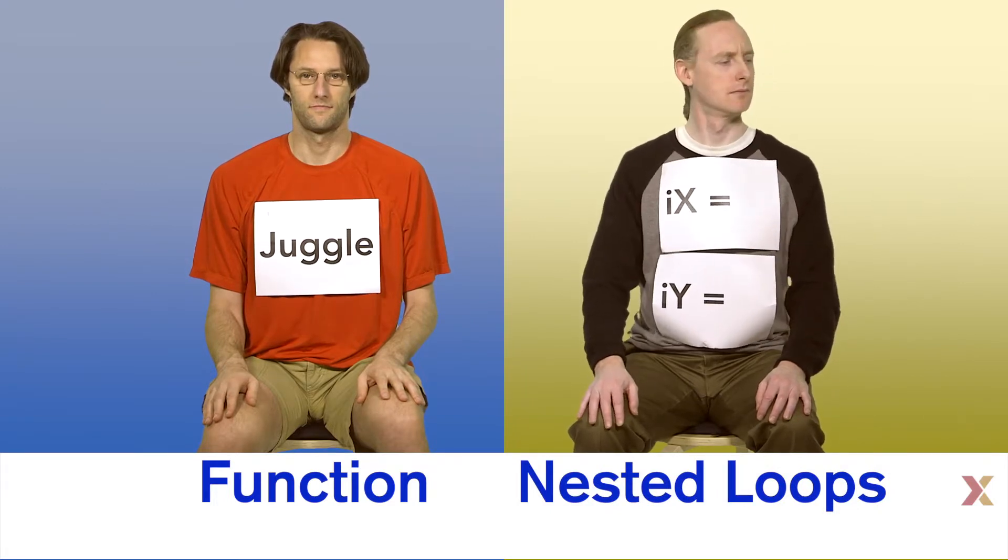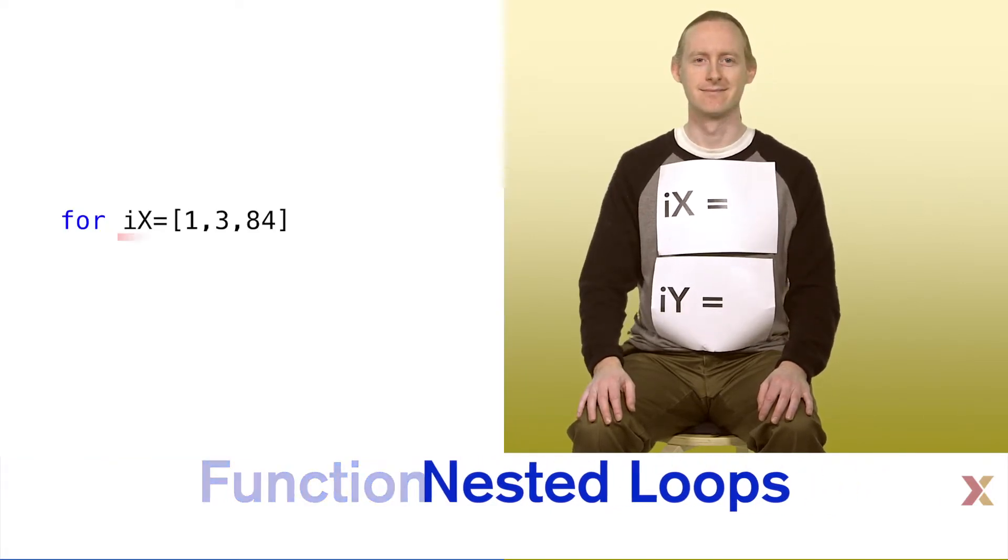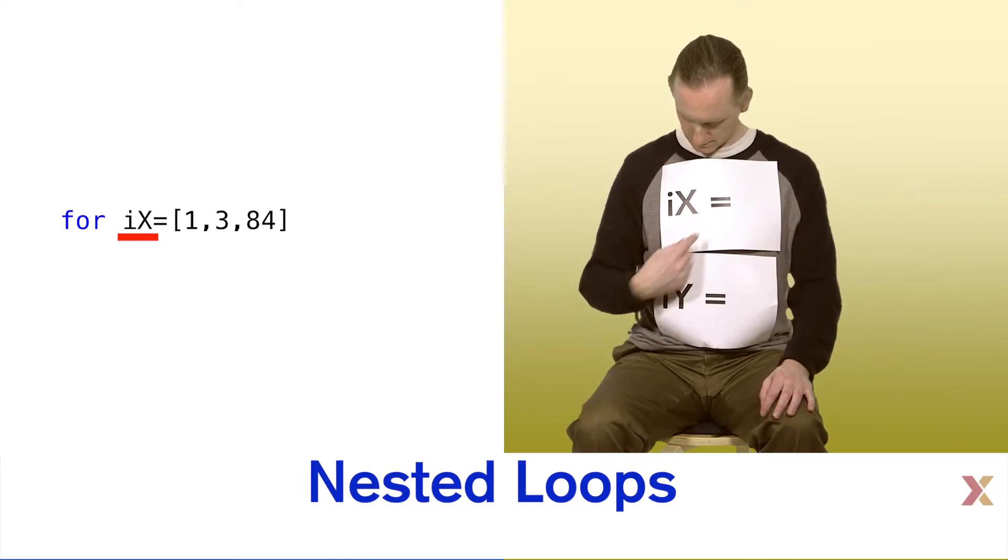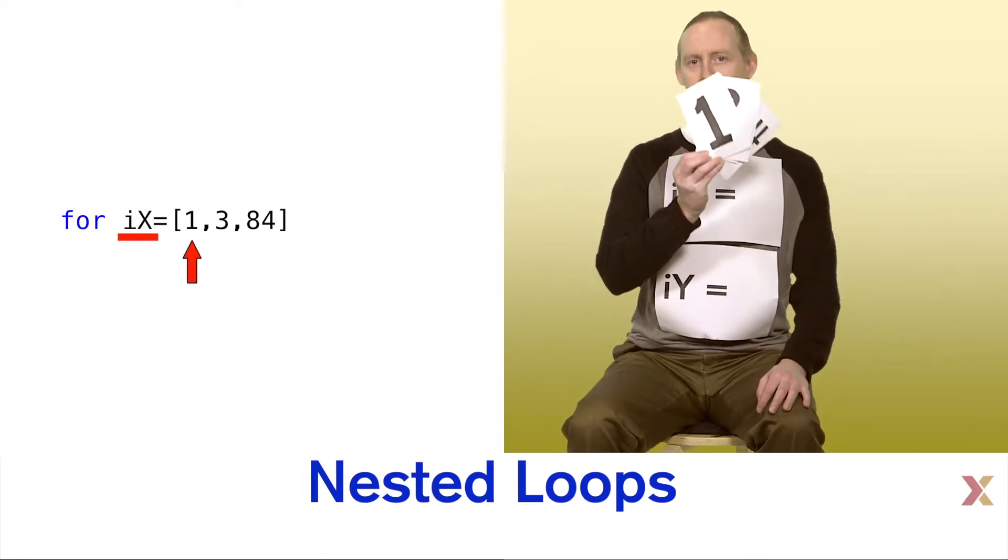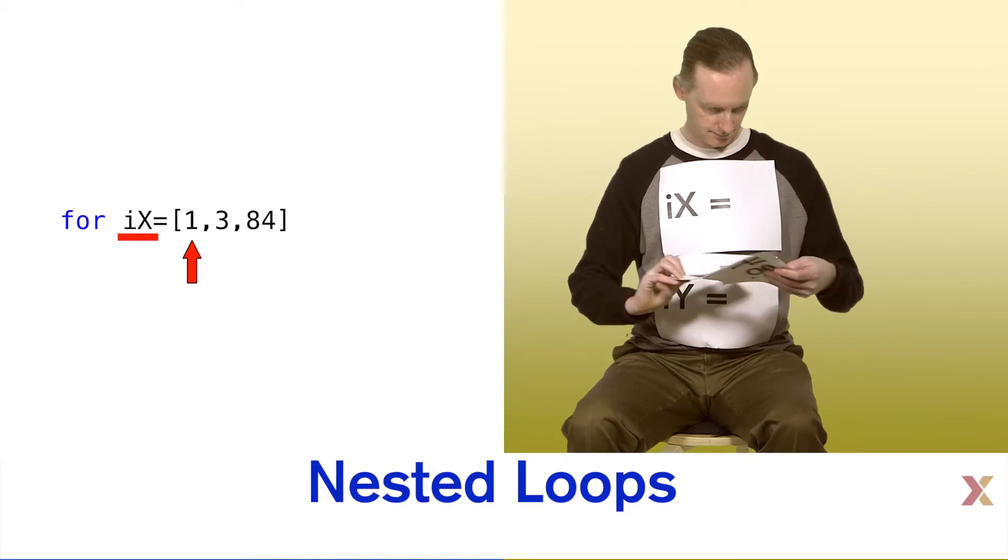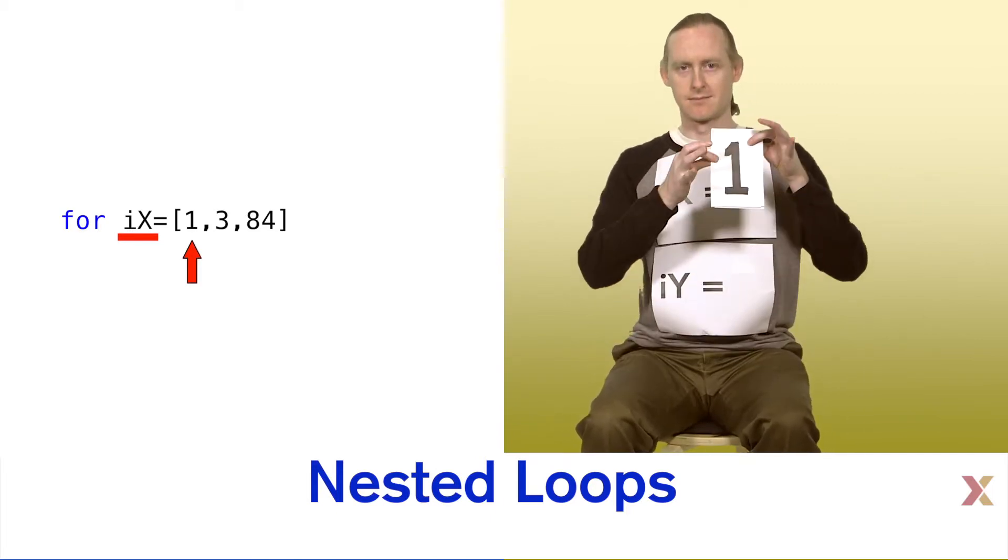When we hit the first for statement, we define the value ix as equal to the first value of the array in the loop declaration. In this case, the array is an array of doubles, and the value of the first element of the array is 1.